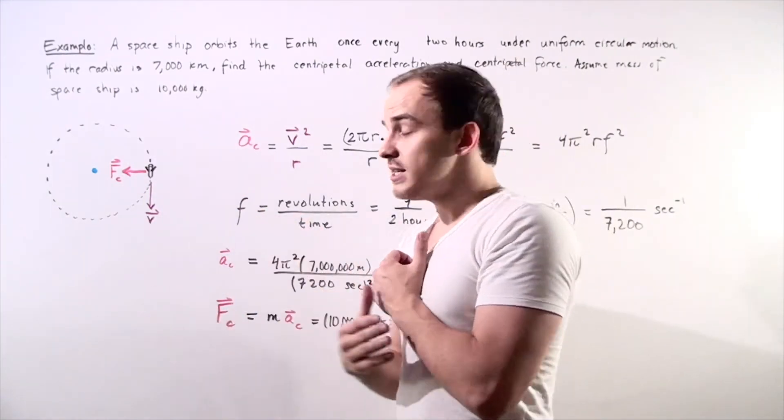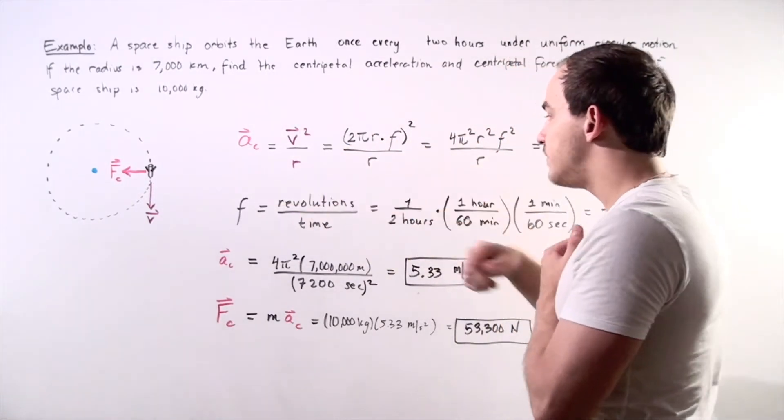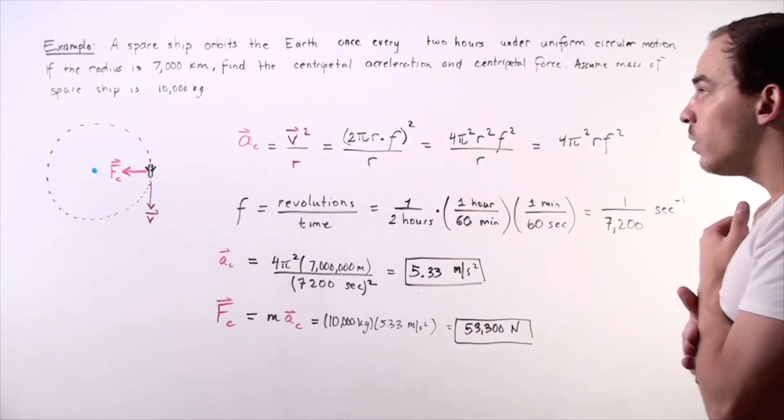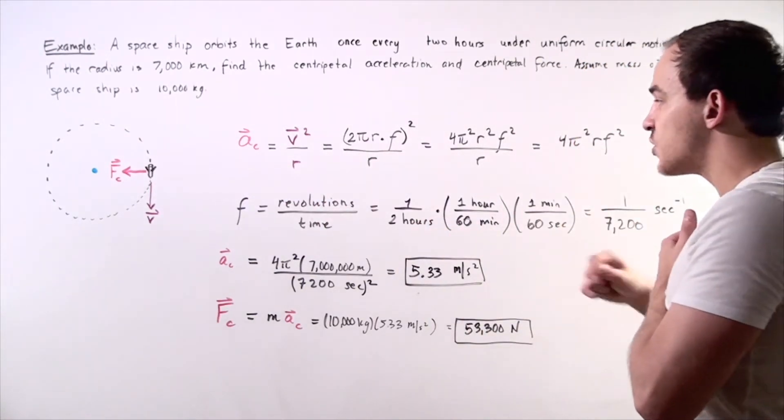F, the frequency, is given by revolutions or orbits per some given time. So we are told that our spaceship takes two hours to make a single orbit.